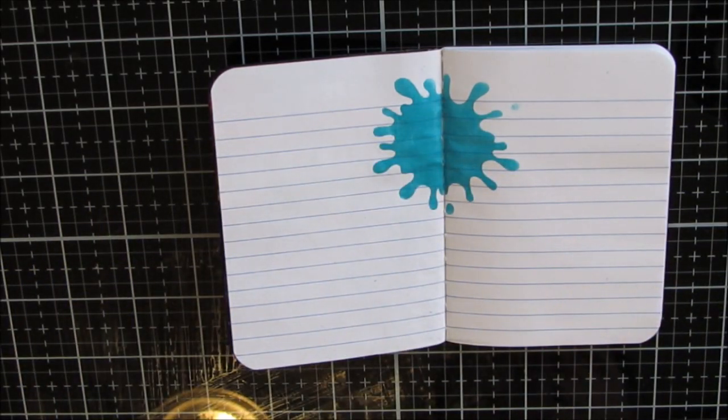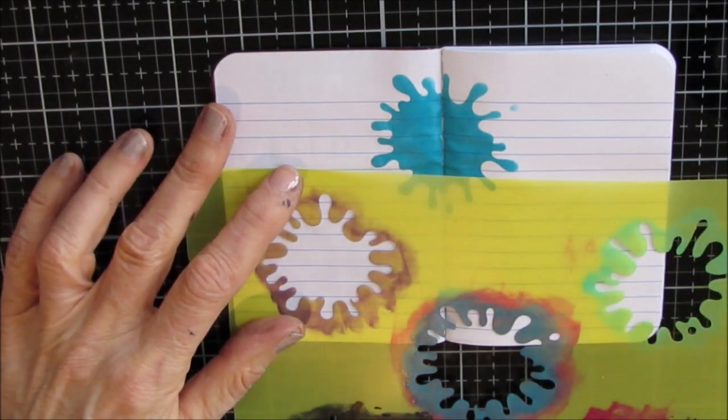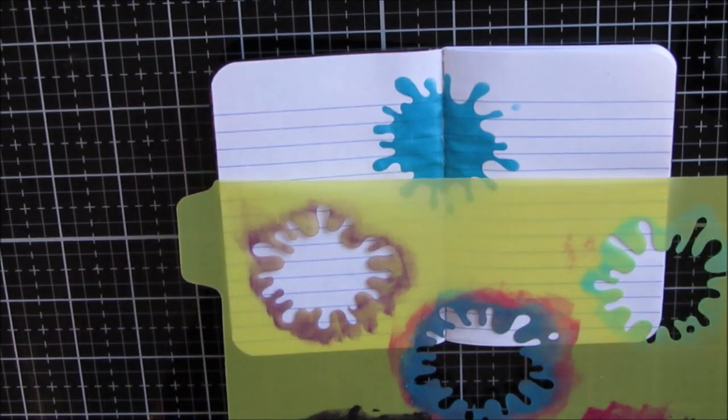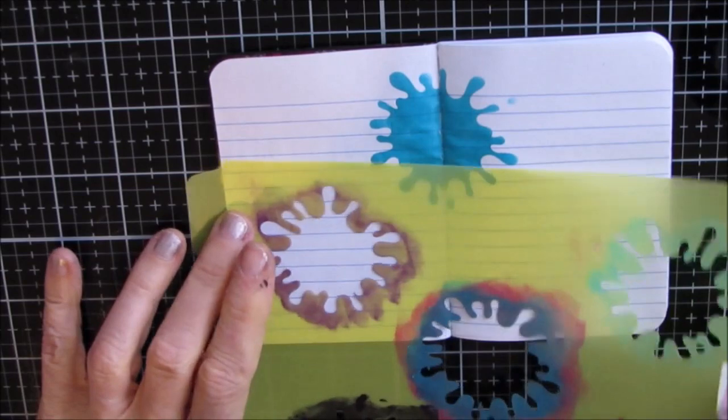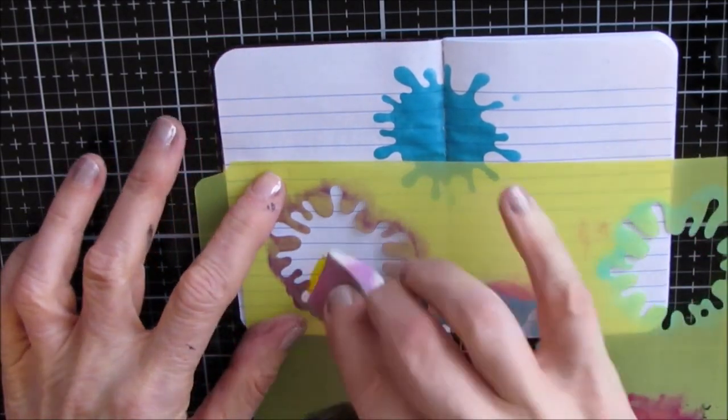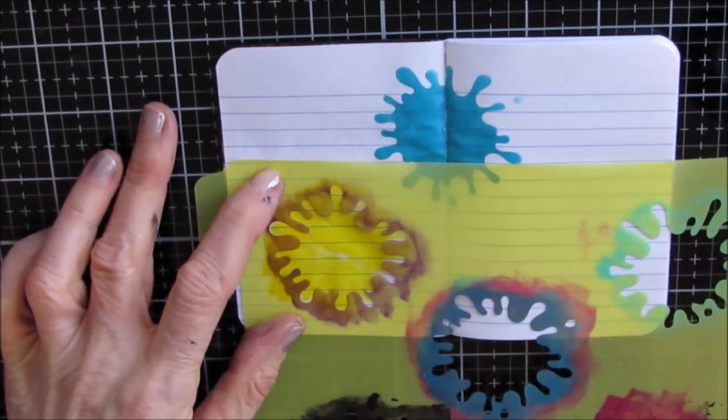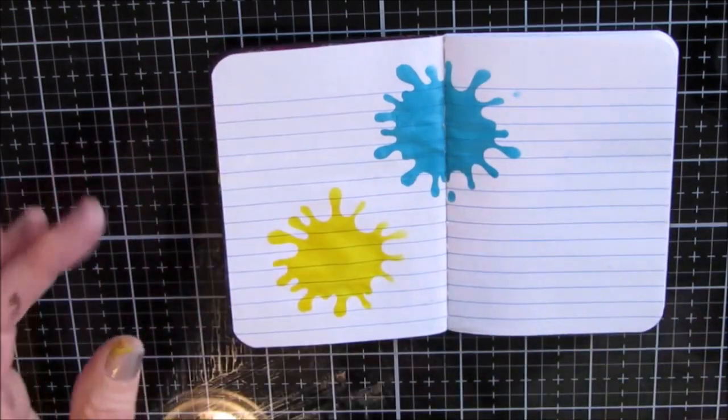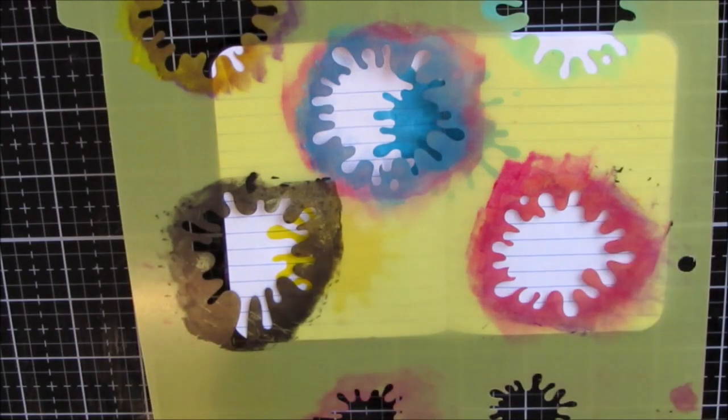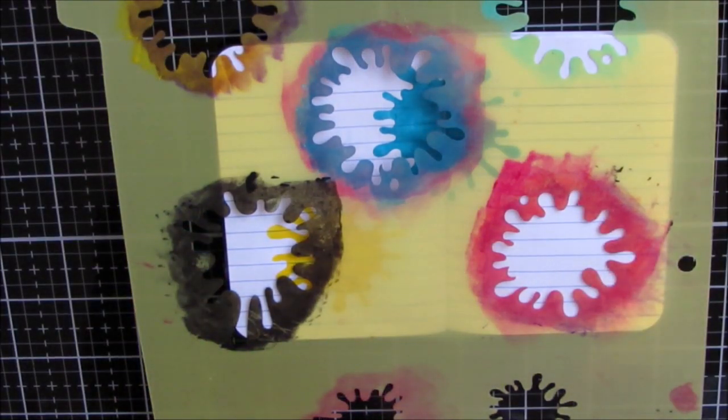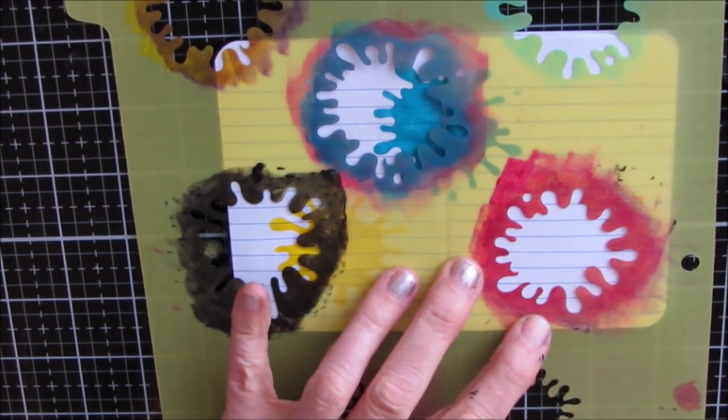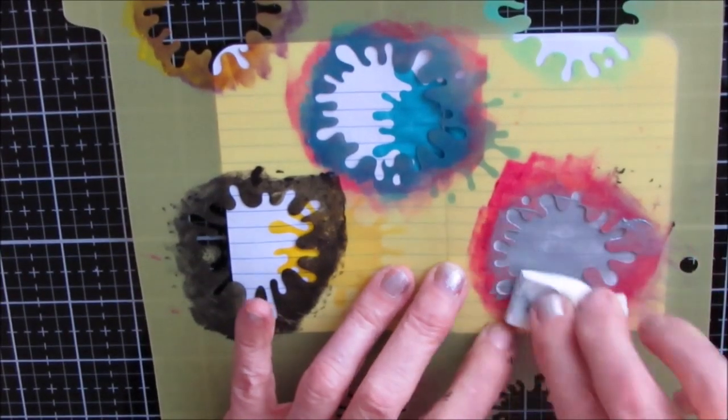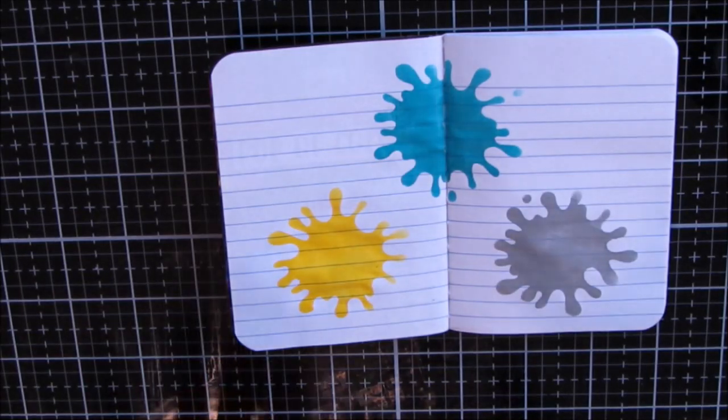I'm just going to get the color down here. So there is the teal that I used. Now you can mix every single one of the colors with white or with black or with each other. But I just want to put them down here. These are the colors I use. Now I'm going to list the names of the colors that I have.